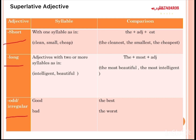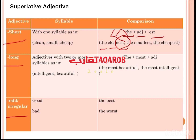The rule for the short adjective is: the + adjective + est. For example, 'the cleanest' — we add -est because 'clean' is a short adjective. Another example: 'the smallest' — we add -est because 'small' is a short adjective.